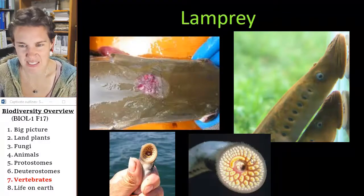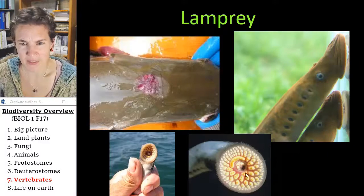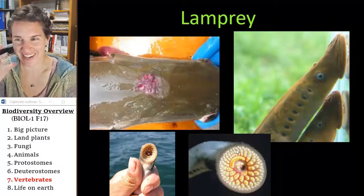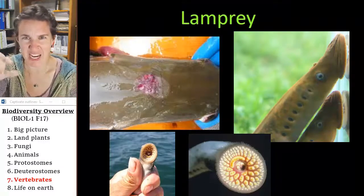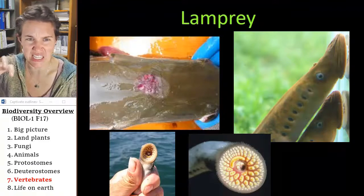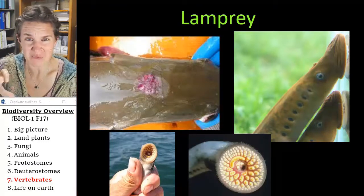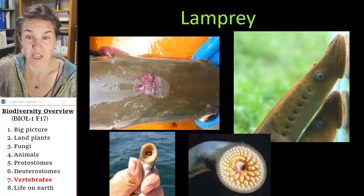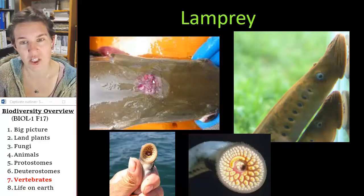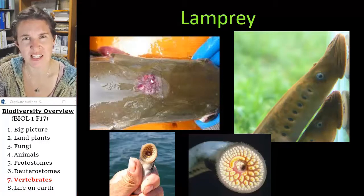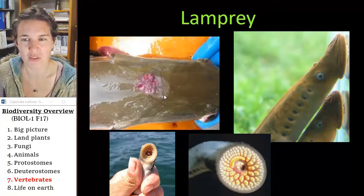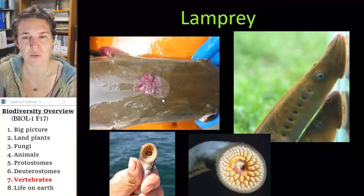And you can see that it has like this mouth that isn't a jaw, right? It's like a sucker thing, but it has these teeth things that basically dig a hole in a fish. And if you catch a fish and you see these kind of raw spots, you'll know that there was actually a lamprey attached to that little guy.